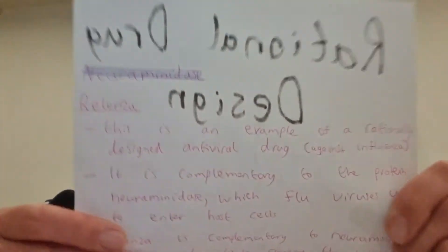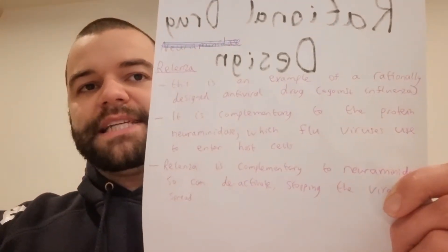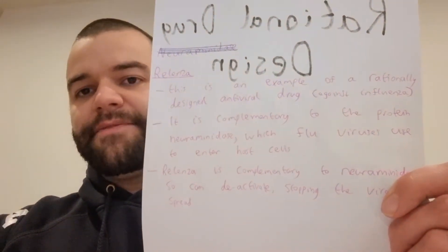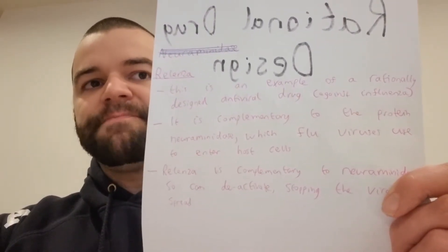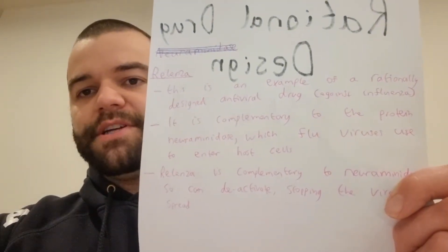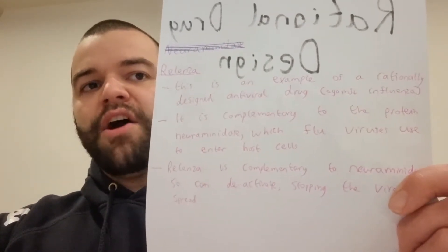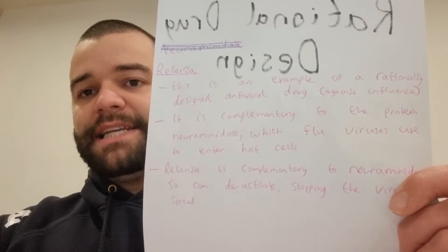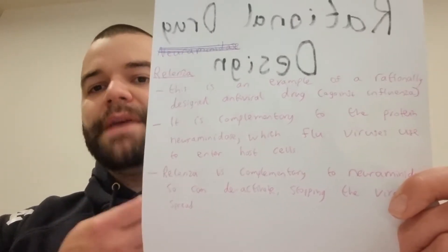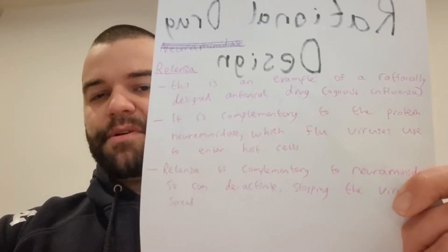That is the concept of rational drug design. There is a specific example of a rationally designed drug for you to be aware of, and that is the drug Relenza. Relenza is a rationally designed drug used to treat the influenza virus, more commonly known as the flu virus. The way that it does that is that flu viruses use a protein called neuraminidase to allow them to enter their host cell. So Relenza is complementary to the neuraminidase — it can bind to it and therefore deactivate it, meaning it's much harder for the flu viruses to enter your cells, meaning they can't reproduce and go on to keep making you ill.